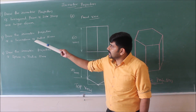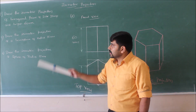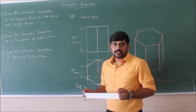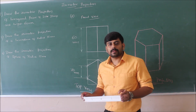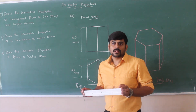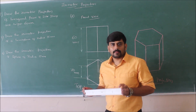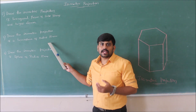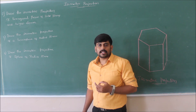Problem 3 states: draw the isometric projection of the hemisphere of radius 15 millimeters. To draw this, note that the top face of the hemisphere is a circle. As explained in lecture 1, construct the isometric projection of a circle using the four-center method. First, construct a circle of diameter 30 millimeters enclosed in a square — giving an isometric projection of that square of dimension 30 millimeters.